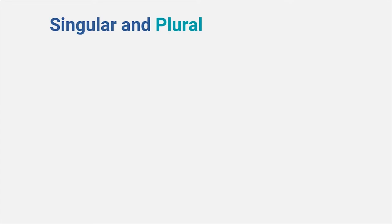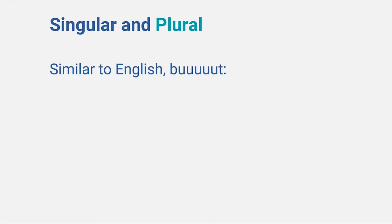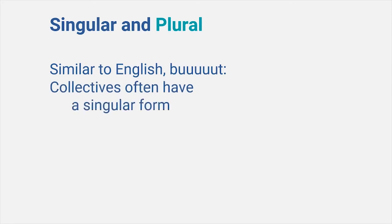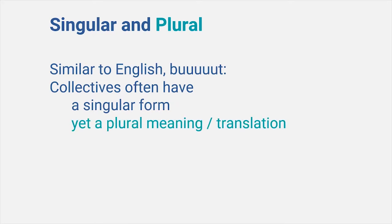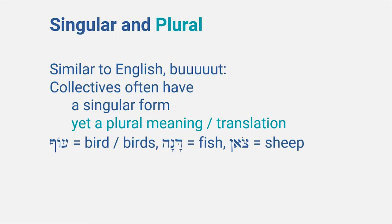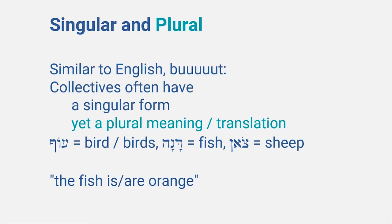Let me transition to the next topic by saying a few words about how singular and plural work in Hebrew, for though it is nearly identical to English, there are some ways in which Hebrew is different. There are a few collective words that have a singular form but should probably be translated as a plural in English. One common example is of, which means bird or birds. Or the word dagan, which means fish. And then tzon means either sheep or sheep. In English you know by the verb whether it is singular or plural, but in Hebrew these collective words always take a singular verb form, and it is up to the reader or translator to determine whether the meaning is singular or plural.